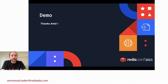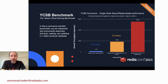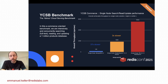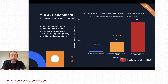Thanks, Ariel, for the demo. I'd like to talk about a benchmark — the Yahoo Cloud Serving Benchmark. We ran the e-commerce version, ingesting a 1 million product database. The benchmark involves continuously updating products while concurrently making searches and reads. What we observed is that compared to other product vendors, Redis is from 3 to 37 times faster. We will soon publish those results and the benchmark source code in a GitHub repository.